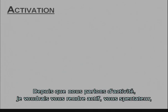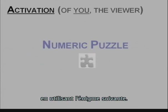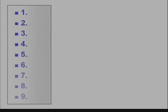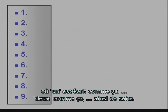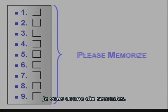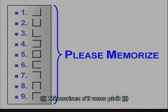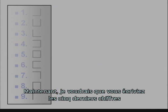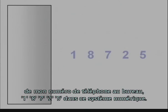Since we were talking about activation, I'd like to activate you, the viewer, using the following puzzle. Please consider the following numeric transcription system where one is written like this, two like this, and so forth. I'll give you 10 seconds. Now I'd like you to write down the last five digits of my office phone number — one, eight, seven, two, five — in this numeric system.